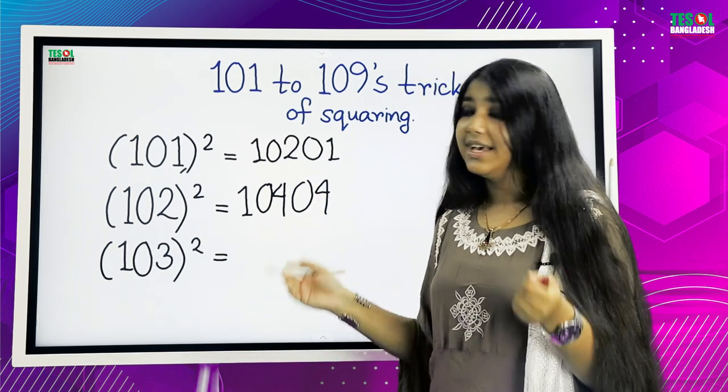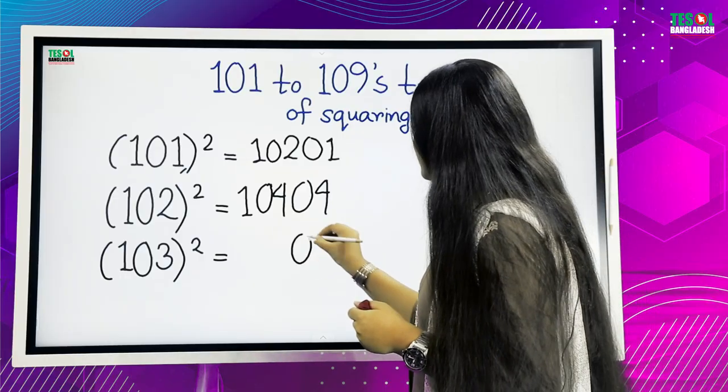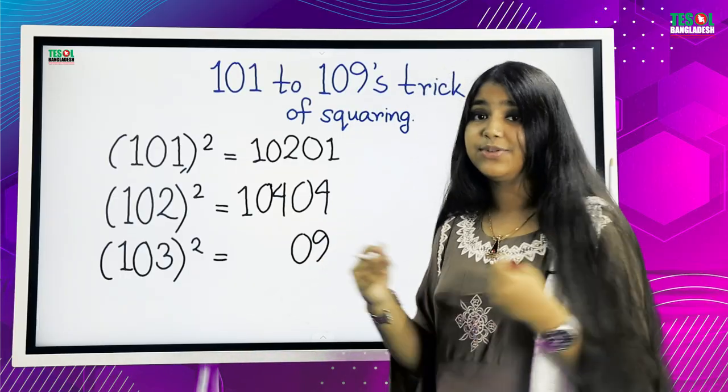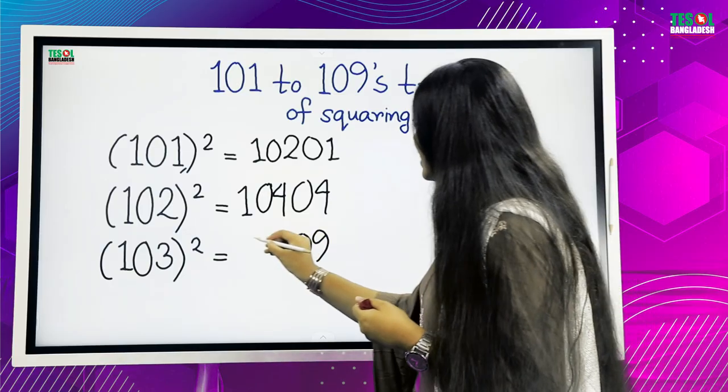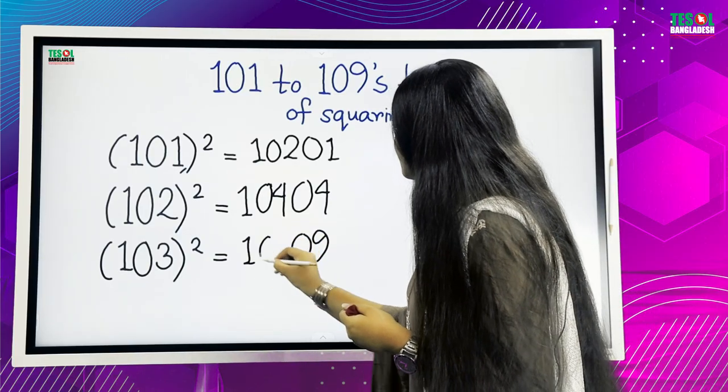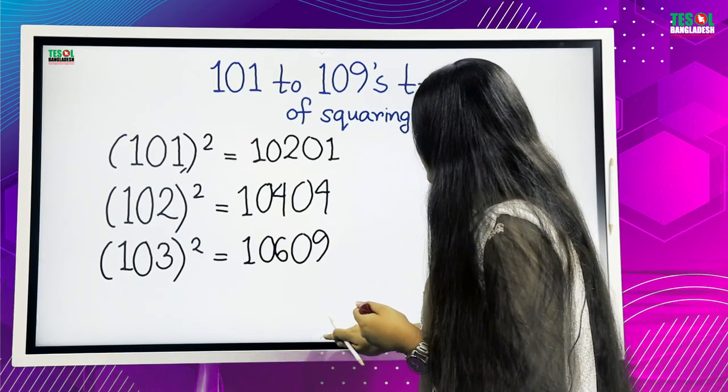Now, 103 squared. 3 times 3 is 9, but we will write 09. And we will add 3 with 103. That means 106, 09. Let's move on to the next slide.